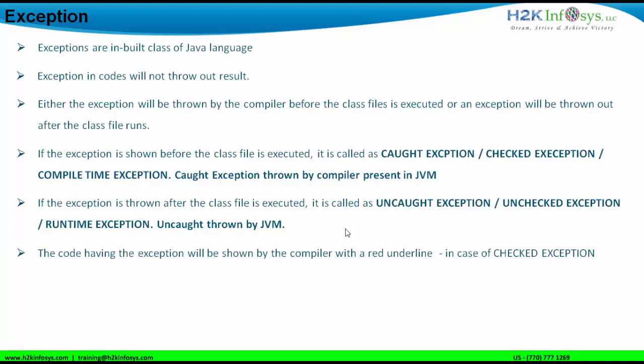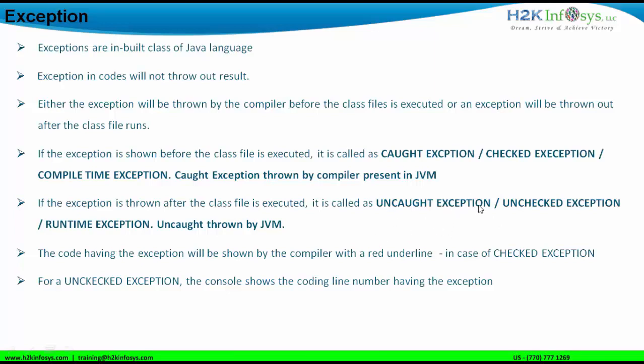The code having the exception will be shown by the compiler with a red underline. This happens in the case of checked exceptions — the moment you write a code that has a problem, it is shown with a red underline, and if you hover your mouse over the red cross button it will show the type of exception. For unchecked exceptions, the console shows the coding line number having the exception, including the type of unchecked exception and the line number in your class file.